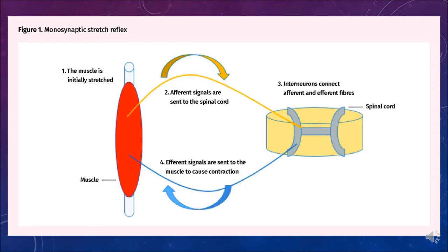In a simple monosynaptic stretch reflex, when a muscle fiber is stretched, that motion is picked up by the muscle spindle. An afferent signal is generated, sent to the spinal cord, and the interneuron connects it to the efferent signal sent to the muscle, causing contraction. In spasticity, this monosynaptic stretch reflex becomes grossly exaggerated and erratic.